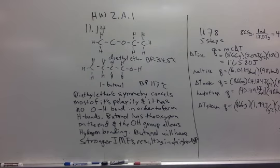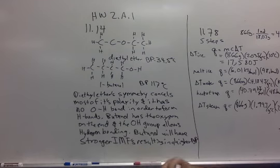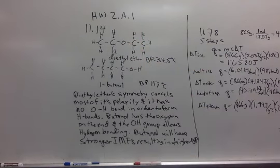Starting with 11.14, we're comparing diethyl ether and 1-butanol, which actually are isomers of each other. Each one has four carbons, 10 hydrogens, and 1 oxygen.